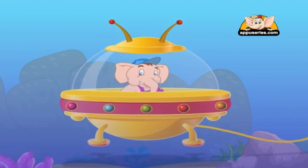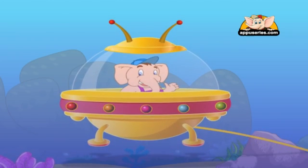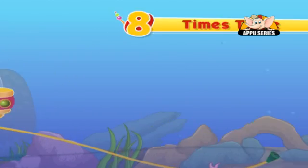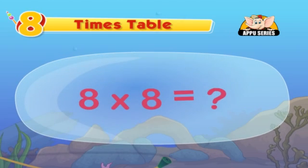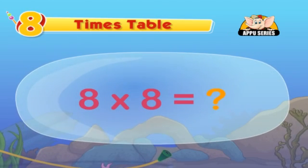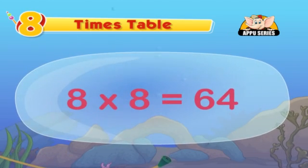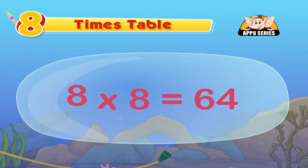Double the table 4 to get the table 8. Now, let's practice one. What is 8 times 8 equal to? That's right! It's 64.